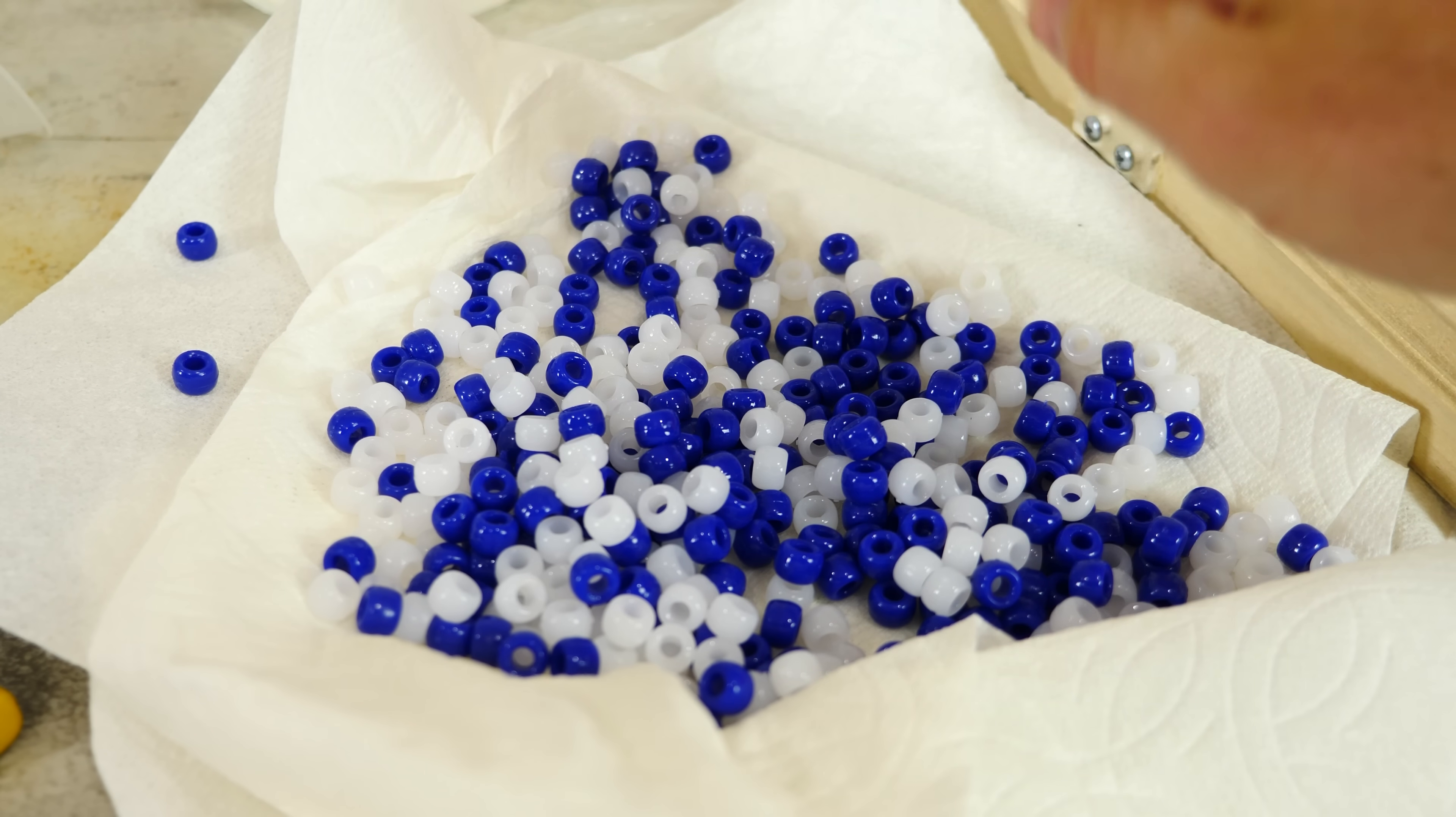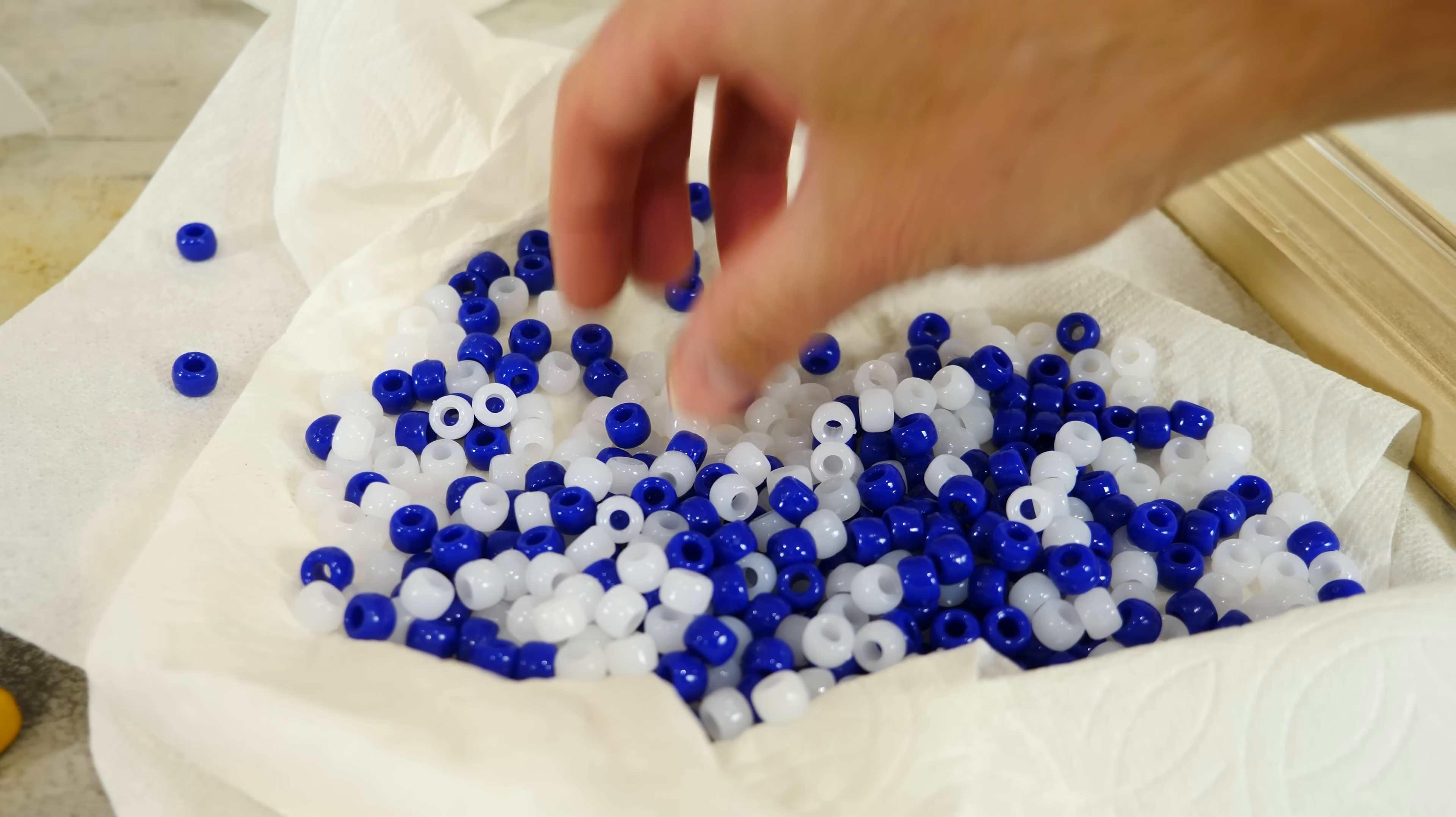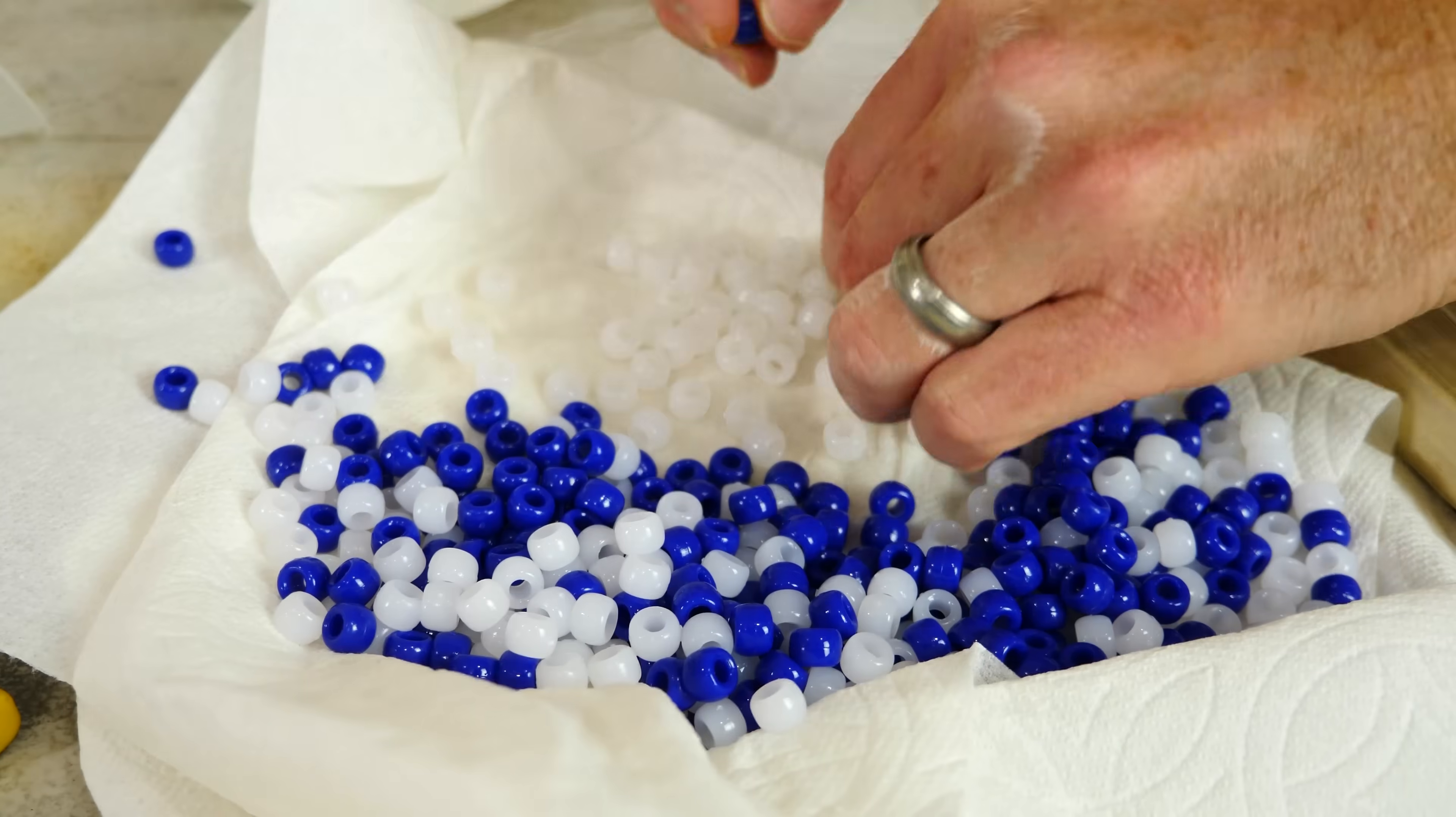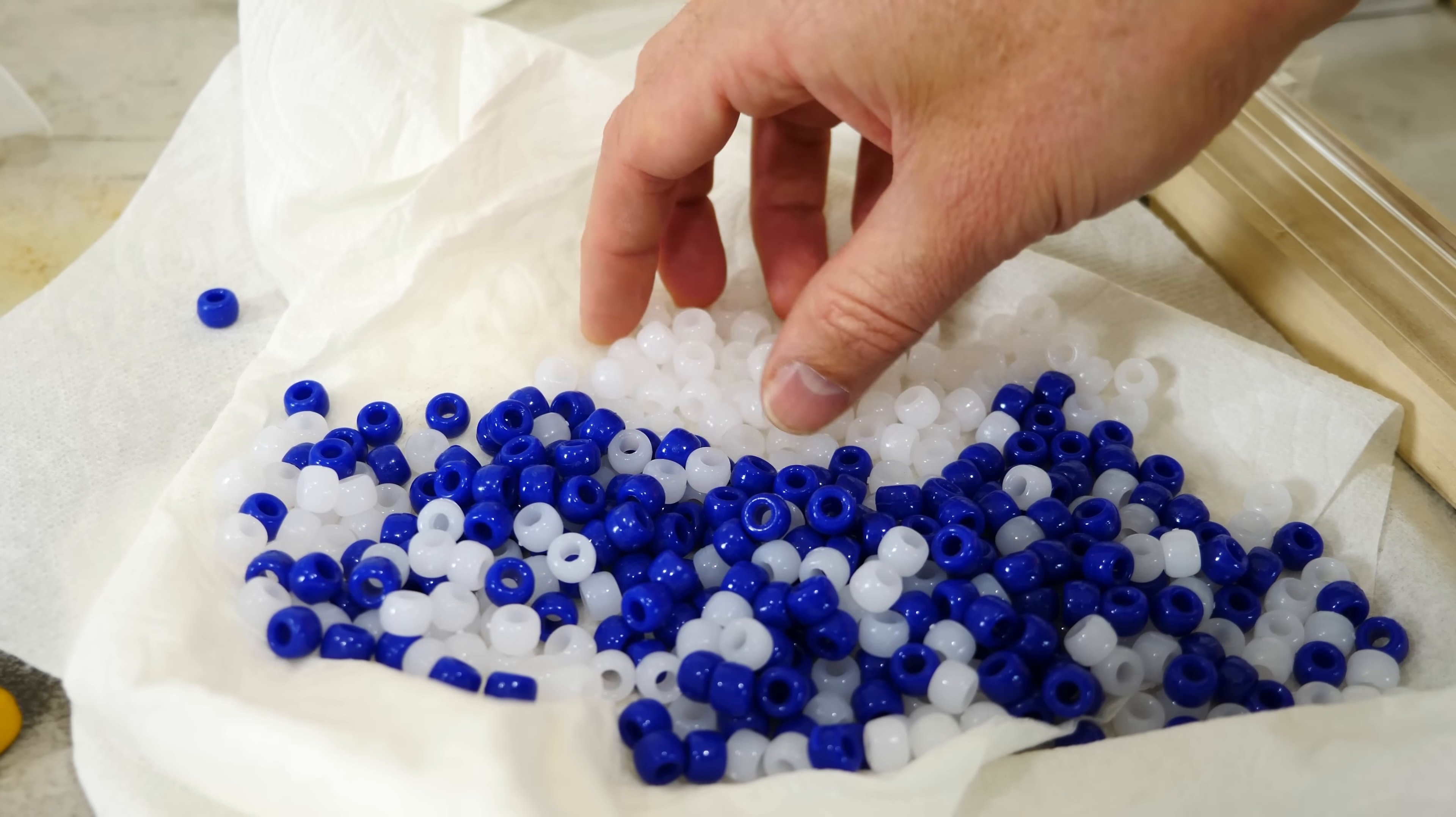I want the white ones stacked on top and the blue ones stacked on bottom, and they have to be touching. So I could separate them myself. Start getting the white ones up top here. Okay, this is taking way too long.